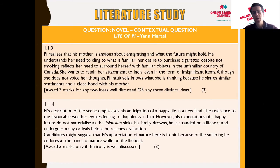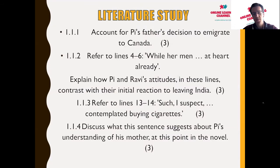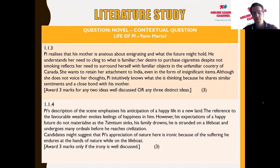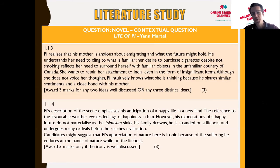Question four: Pi's description of the scene — waving goodbye with sunshine, a steady breeze, and shrieking seagulls — emphasizes his anticipation of a happy life in a new land. The favorable weather evokes feelings of happiness in him. However, his expectations of a happy future do not materialize: the Tsimtsum sinks, his family drowns, he is stranded on a lifeboat, and undergoes many ordeals before reaching civilization. Candidates might suggest that Pi's appreciation of nature here is ironic, given the suffering he must endure at the hands of nature on the lifeboat.